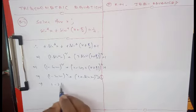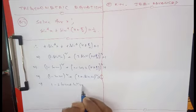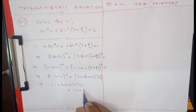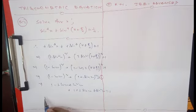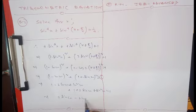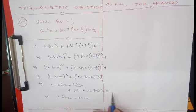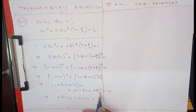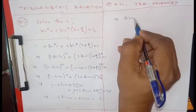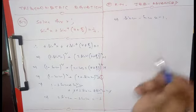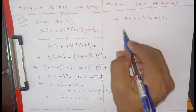Expanding: (1 - 2cos 2x + cos²2x) + (1 + 2sin 2x + sin²2x) = 1. This simplifies to 2 + 2sin 2x - 2cos 2x + 1 = 1, giving 2sin 2x - 2cos 2x = -2. Dividing by 2: sin 2x - cos 2x = -1.